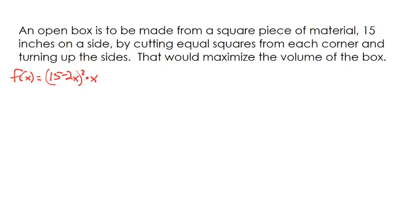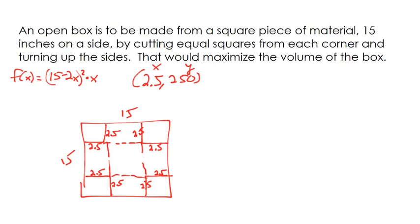So we said our function is f(x) = (15 - 2x)² times x. And so what we have is we said our max was 2.5 comma 250. And so what that means is that when I take my box and I cut off corners that are, let me draw this neatly.